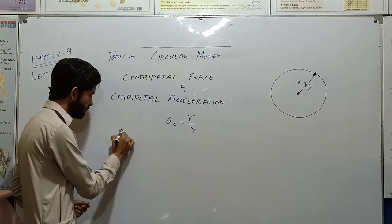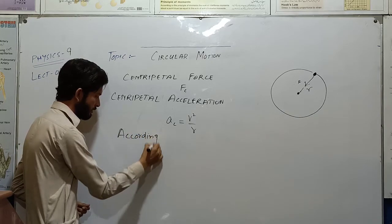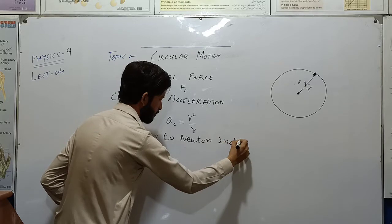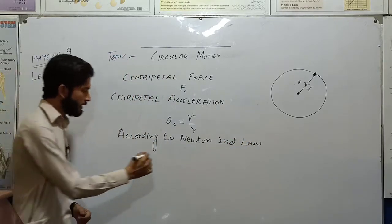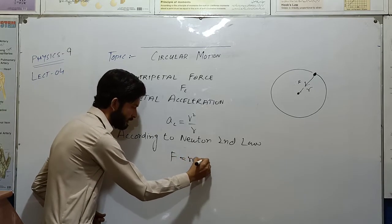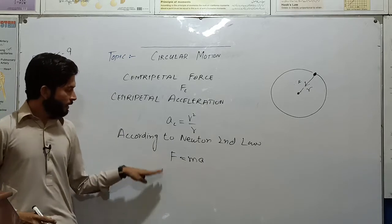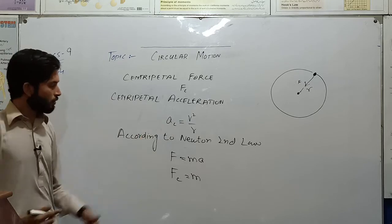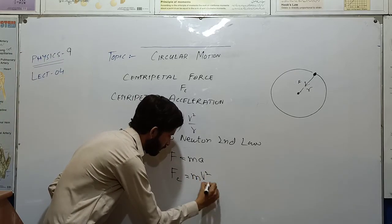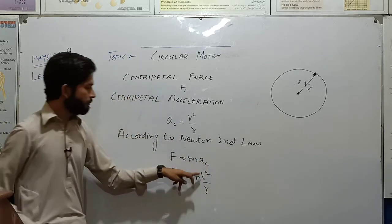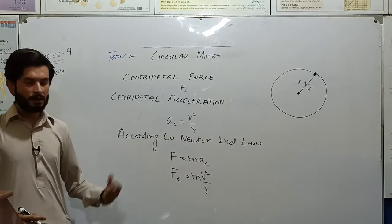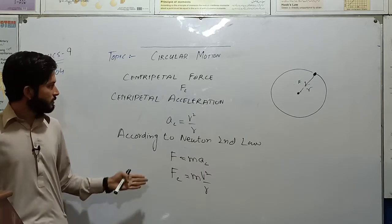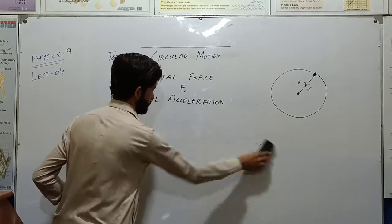According to Newton's second law, F is equal to MA. So if we have force F, then M times acceleration is simple — it is the value of M times acceleration. Now we have centripetal acceleration, and putting it in here, we have the centripetal force mathematically as Fc = mv²/r.